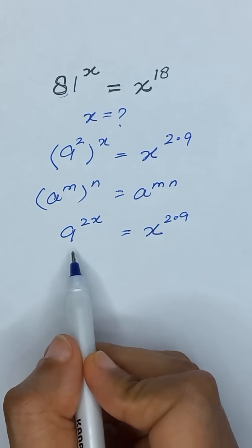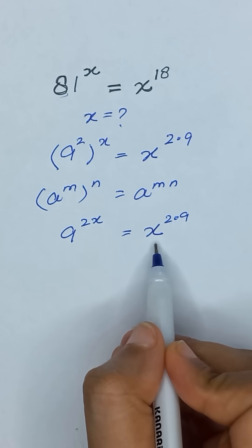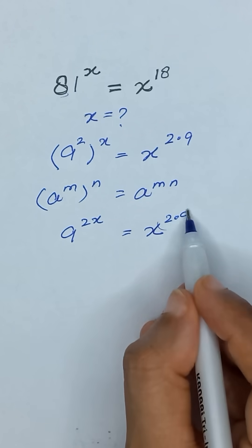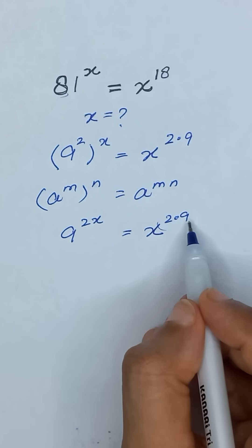Now you can see that in the left-hand side we have base 9 and in the right-hand side we have base x. And in the exponent we have 2 times x, and in the right-hand side we have exponent 2 times 9.